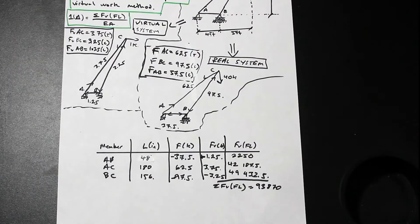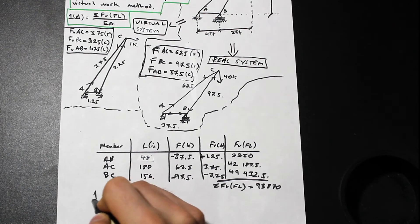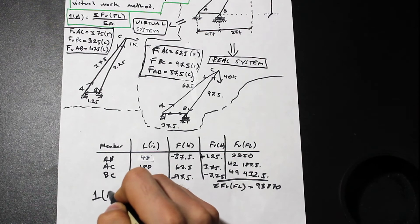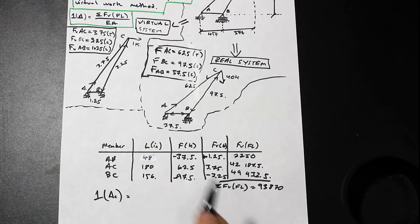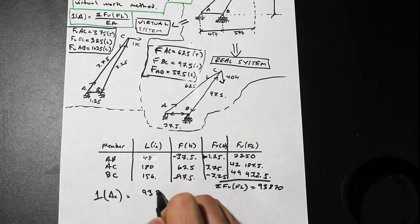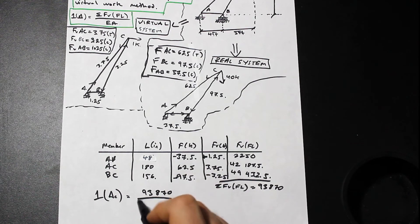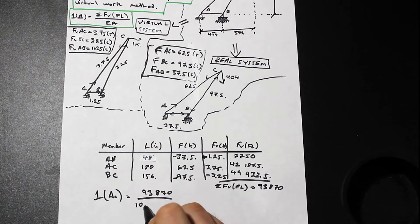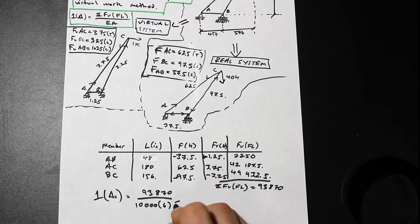Finally, we're at the end of the question. The deflection at C, the horizontal deflection, is simply going to be the sum of FVFL, which is 93,870 divided by EA. We know that we use the same units for everything, so we can just use the same units that are given for EA. So we made our lives easier, times six. And that's simply going to be 1.56 inches.